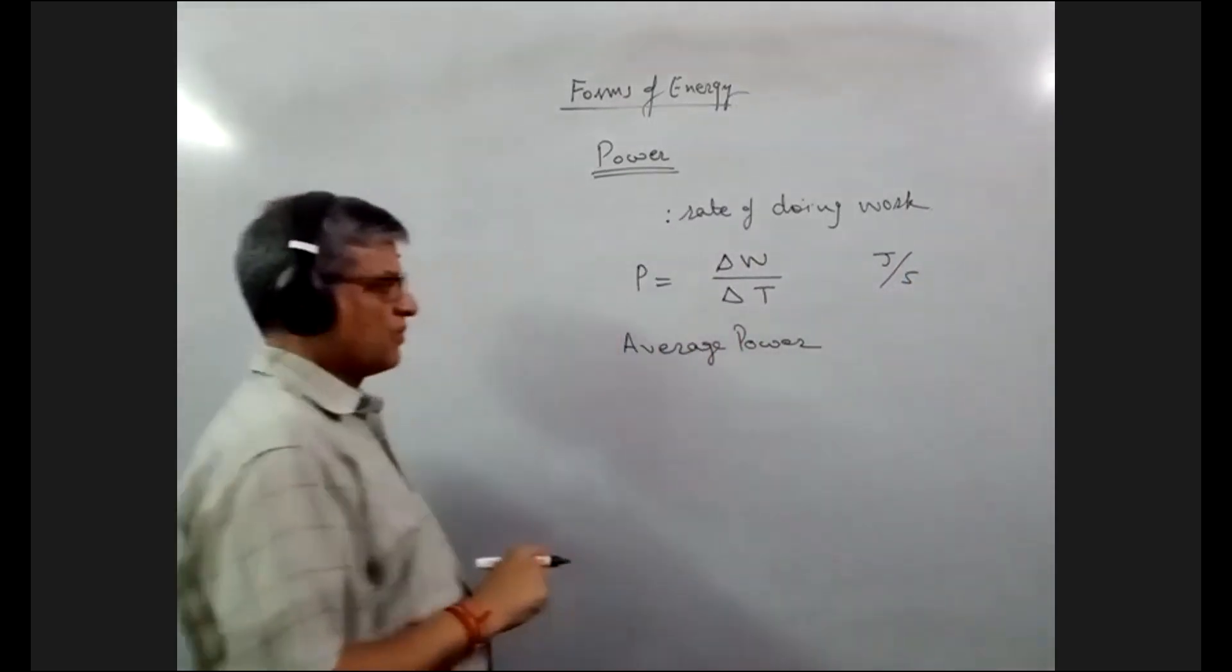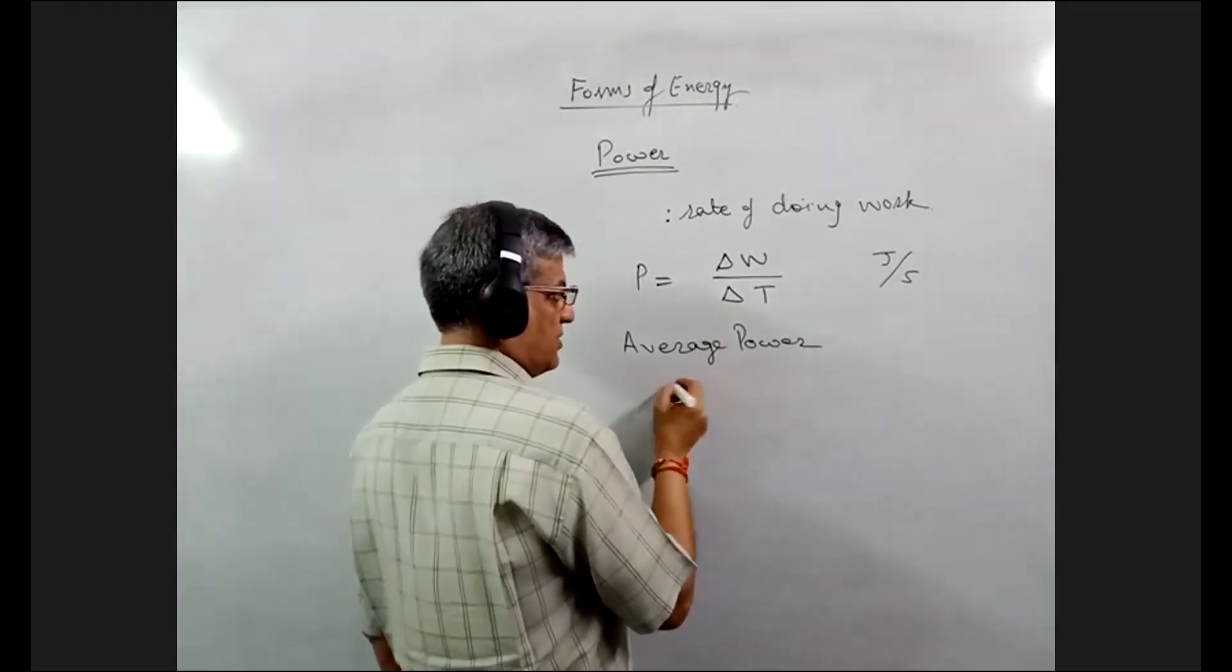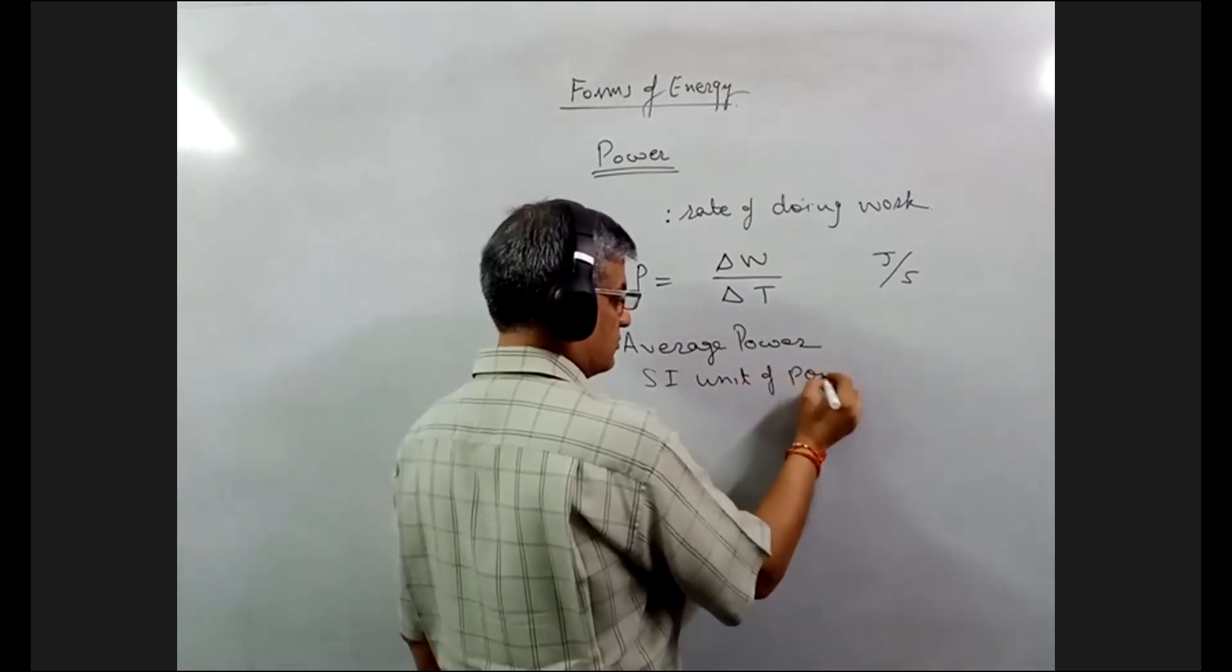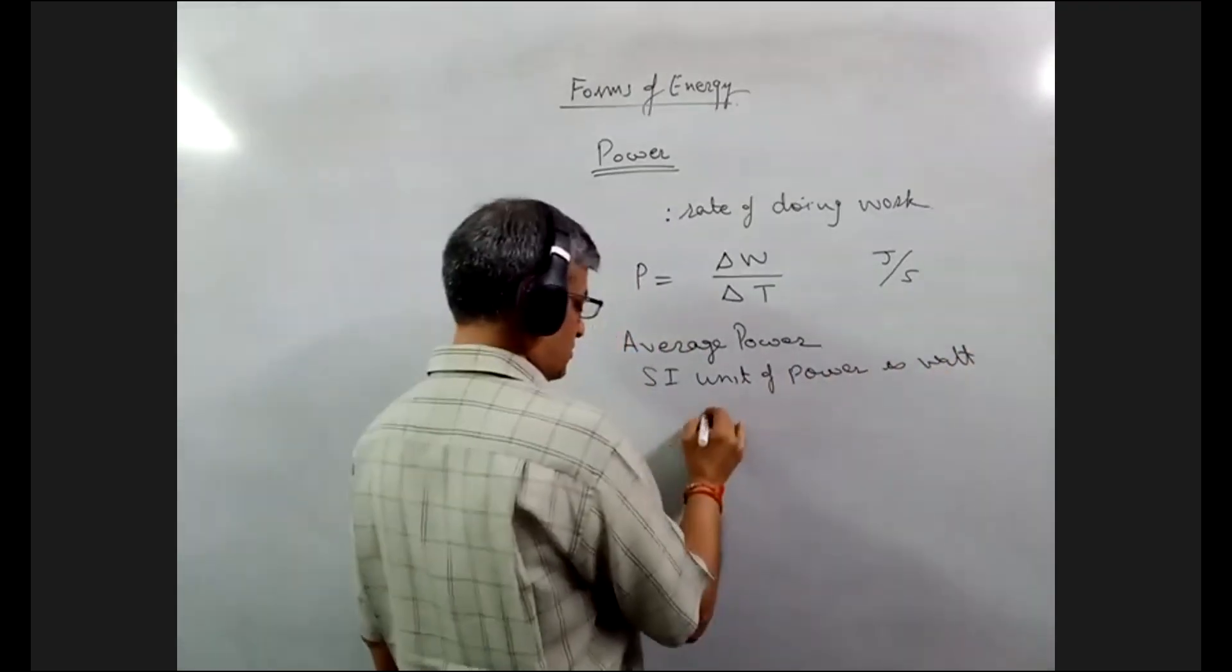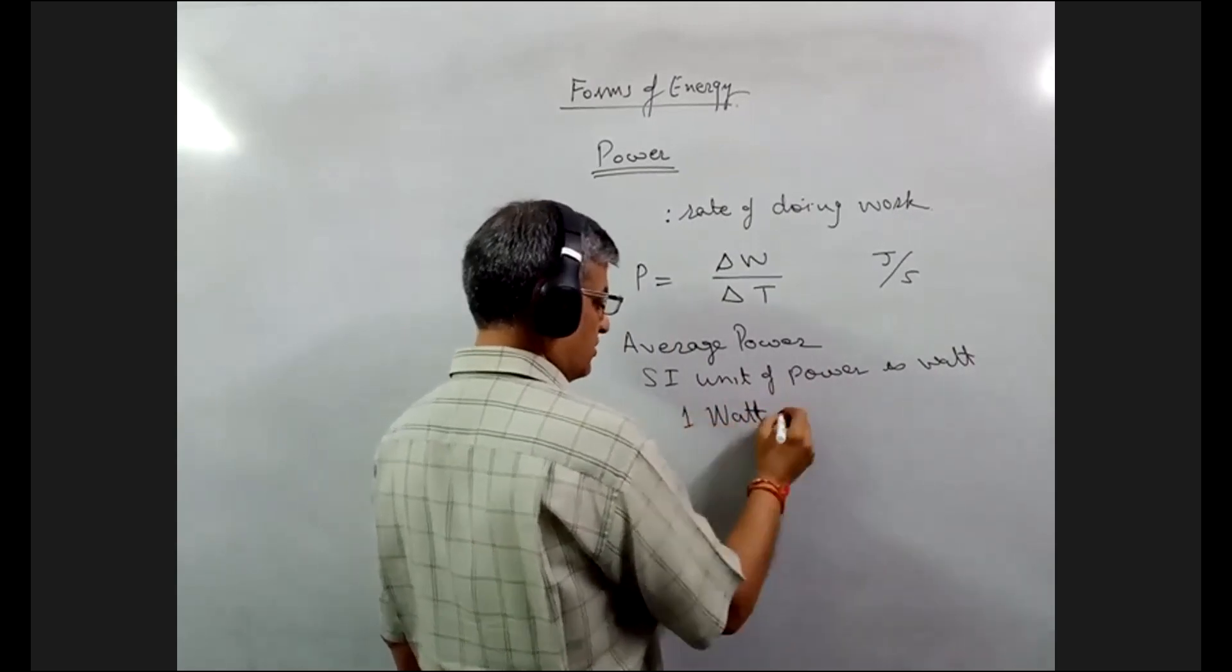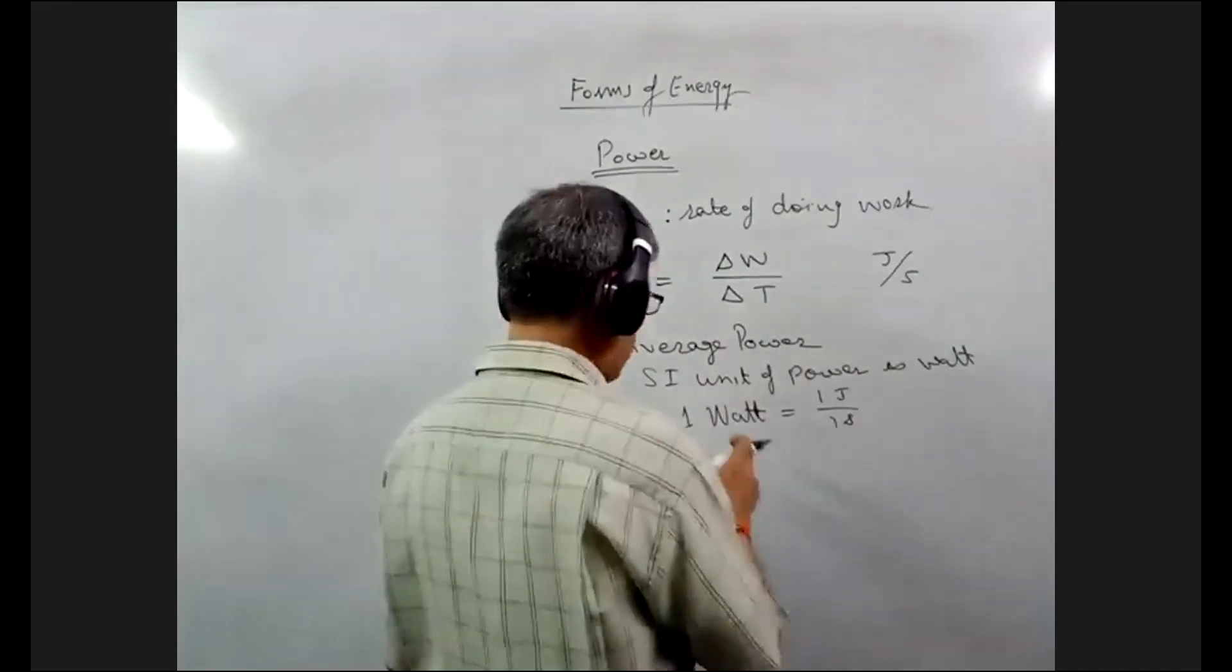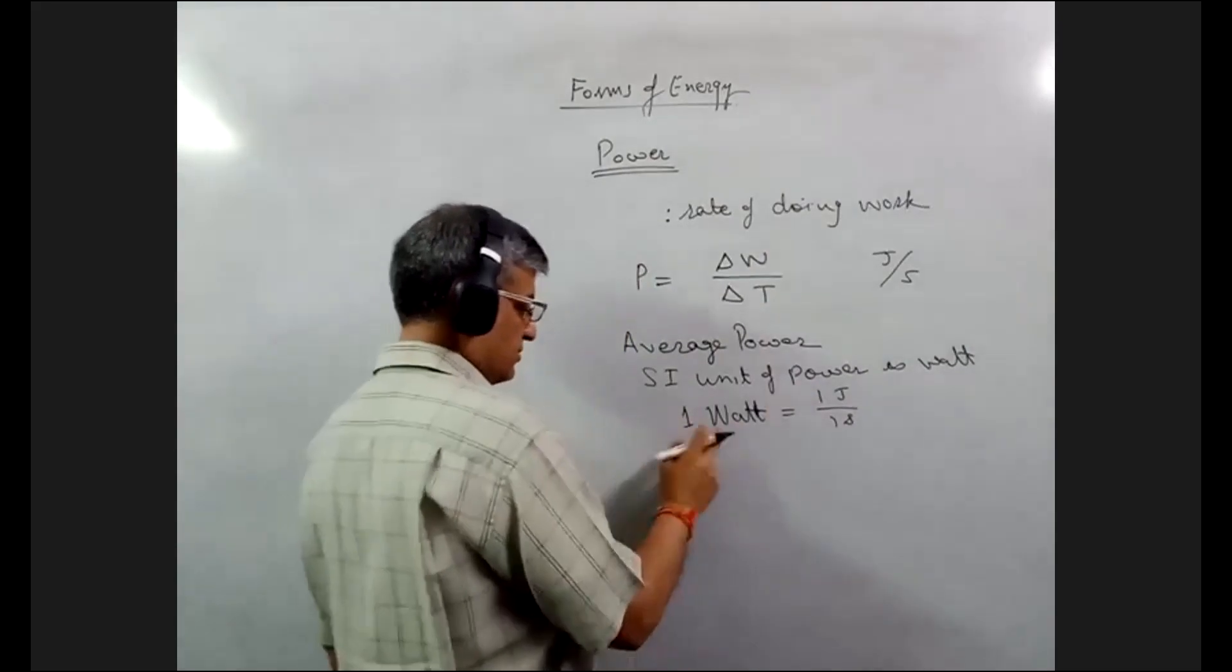Joule per second. So Joule per second is given a name after the name of James Watt as a unit of power. So we call SI unit of power is Watt. So 1 Watt is 1 Joule in 1 second. When 1 Joule of work is done in 1 second, the power spent is 1 Watt. And this is 1 Joule per second is Watt.